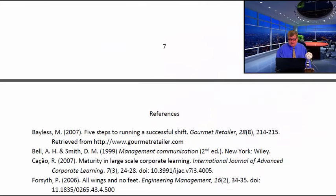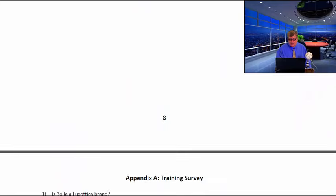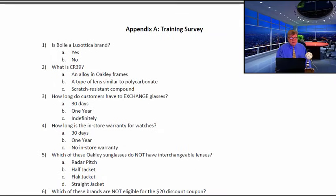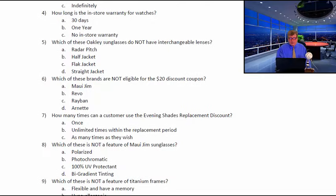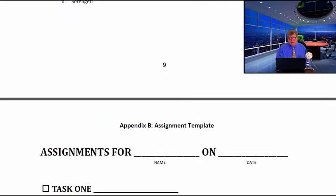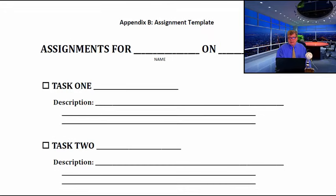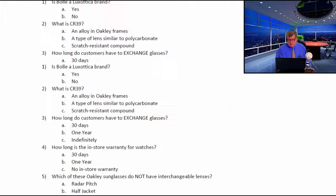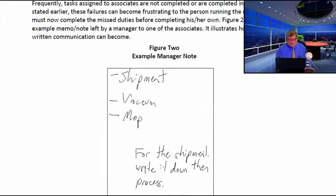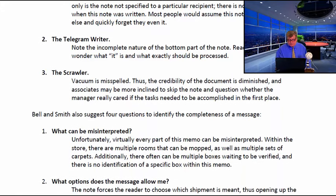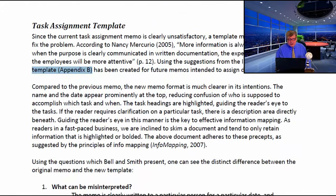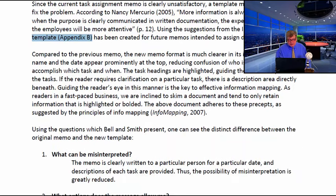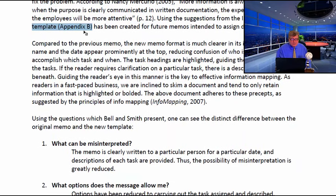Let's scroll through to the appendices — they come after your references page. Appendix A is the training survey; notice how long it is, so it would not fit as a figure. Appendix B is the assignment template; it is also too large to fit as a figure. The author can compare the old template with the new template because it has been referenced, and the reader can look at it in Appendix B. That is how you use your appendices.